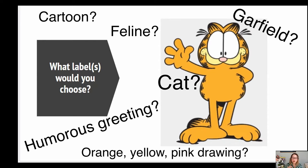What ends up happening is when we use the word 'preferred' and then we use 'alt label,' even the labels that we use in information science are sort of exclusionary. If I said the preferred word for this is Garfield, but you never even knew Garfield was a cartoon and you just called this 'cat' — I just said your words aren't preferred. How would that make you feel? It would make you feel kind of crappy.